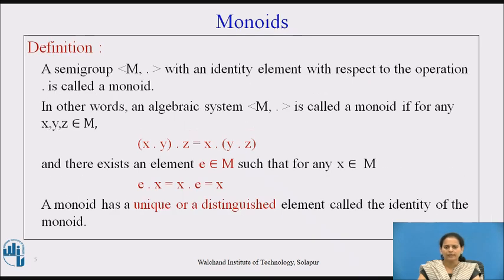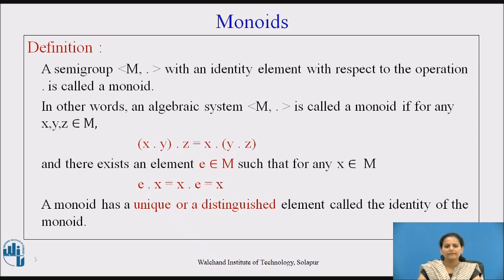Next, monoid — here is the definition. A semigroup (M, dot) with an identity element with respect to the operation dot is called a monoid. It is simply an extension of a semigroup which holds the property of having an identity element with respect to the operation dot. So we can say every monoid is a semigroup which has an identity element.